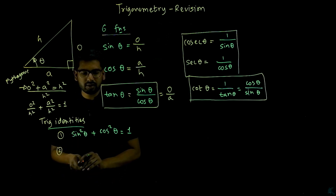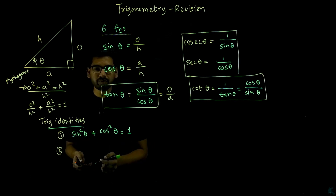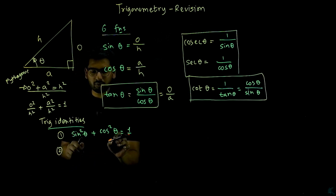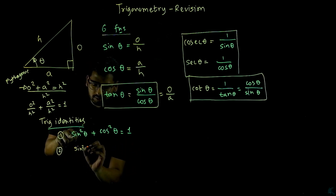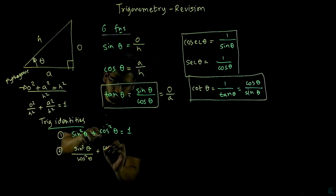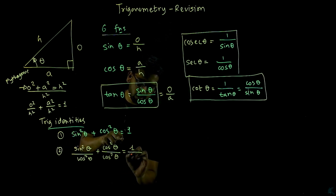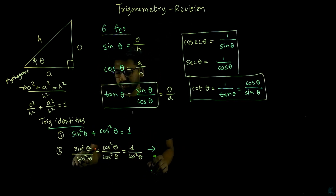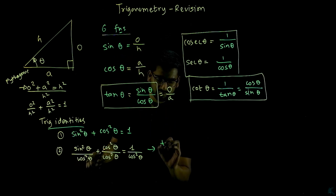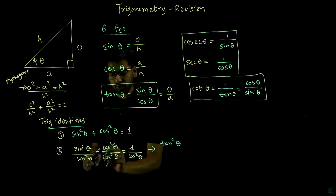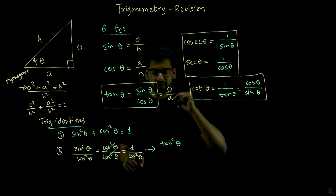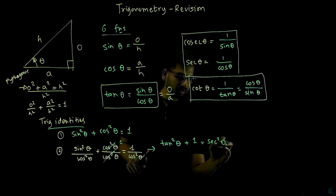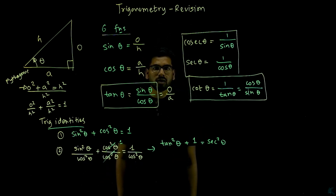The second trigonometric identity comes from dividing the first identity by cos squared theta. You get: sine squared theta over cos squared theta, plus cos squared theta over cos squared theta, equals 1 over cos squared theta. Sine theta over cos theta is tan theta, so sine squared over cos squared is tan squared theta. Cos squared over cos squared is 1, and 1 over cos squared theta is secant squared theta. So the second identity is: 1 plus tan squared theta equals secant squared theta.